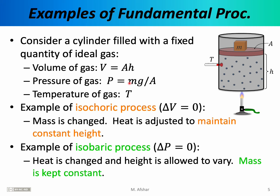An example of an isobaric process — one in which the pressure does not change — is one where basically the height is allowed to vary, but the mass is kept constant. So you might, for example, turn up the Bunsen burner, heating the gas, increasing its thermal energy, and then simply allowing the piston to move up. As the piston moves up, the height increases, which means the volume is changing, and the temperature may also change. But because we have not changed the mass on the piston, the pressure of the gas remains constant, and therefore we have an isobaric process.